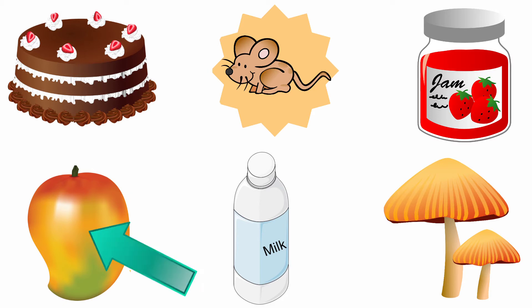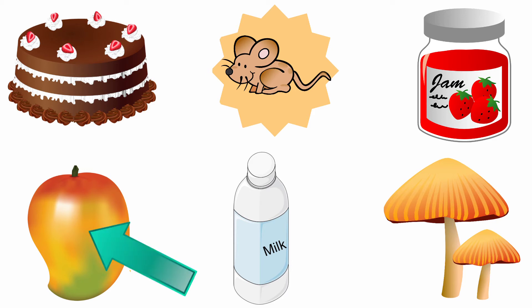Look at the next picture, it is a mango. The beginning sound of the picture mango is M. And the sound of the letter M is M. The sound of the letter M and the beginning sound of the picture mango are the same. So, we are going to draw a line from mouse to mango.